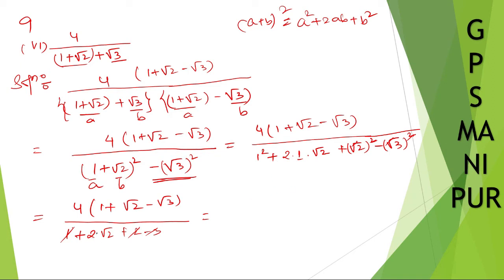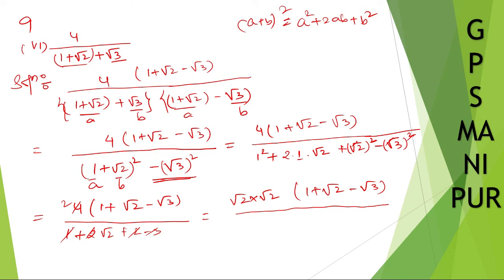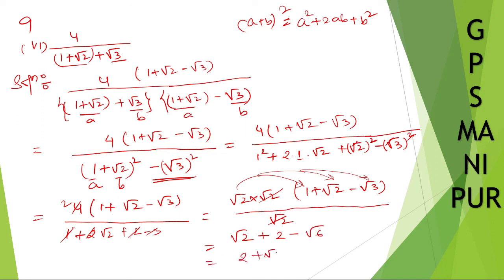What is left is 2 root 2 in the denominator. So we have 4(1 plus root 2 minus root 3) divided by 2 root 2. We can write 2 as root 2 times root 2, so root 2 cancels, leaving us with root 2 multiplied by (1 plus root 2 minus root 3). Distributing: root 2 times 1 is root 2, plus root 2 times root 2 is 2, minus root 2 times root 3 is root 6. Arranging: the answer is 2 plus root 2 minus root 6.